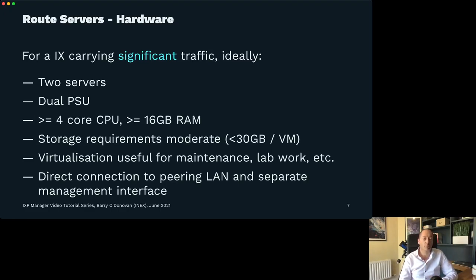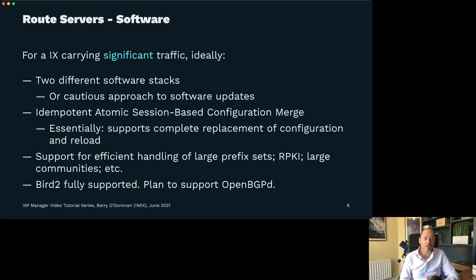The physical box should have a direct connection to the peering LAN if possible and a separate management interface. In terms of software, there really isn't a lot I would consider particularly suitable for route servers. The ones that really are suitable are BIRD version 1 and BIRD version 2 — and you want to go with BIRD version 2 for full RPKI support — as well as OpenBGPD and GoBGP, although I don't myself have a lot of experience with that. You don't need a hardware router like Juniper or Cisco.